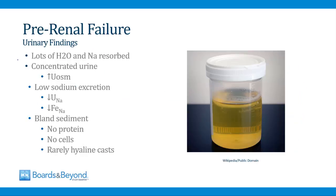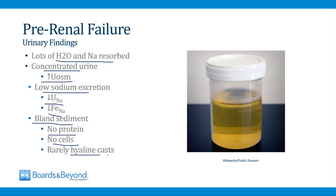To summarize the expected urinary findings in pre-renal failure: the kidneys are reabsorbing lots of water and sodium, so the urine will be concentrated and the urinary osmolarity will be high. Because sodium is being pulled from the urine, there will be low sodium excretion reflected by a low urinary sodium concentration and a low FENa. Patients with pre-renal failure also have a bland urinary sediment — no protein, no cells. There are usually no casts, although hyaline casts can be seen with volume depletion. Protein, cells, and casts suggest glomerular injury, and the glomerulus is healthy in pre-renal failure.